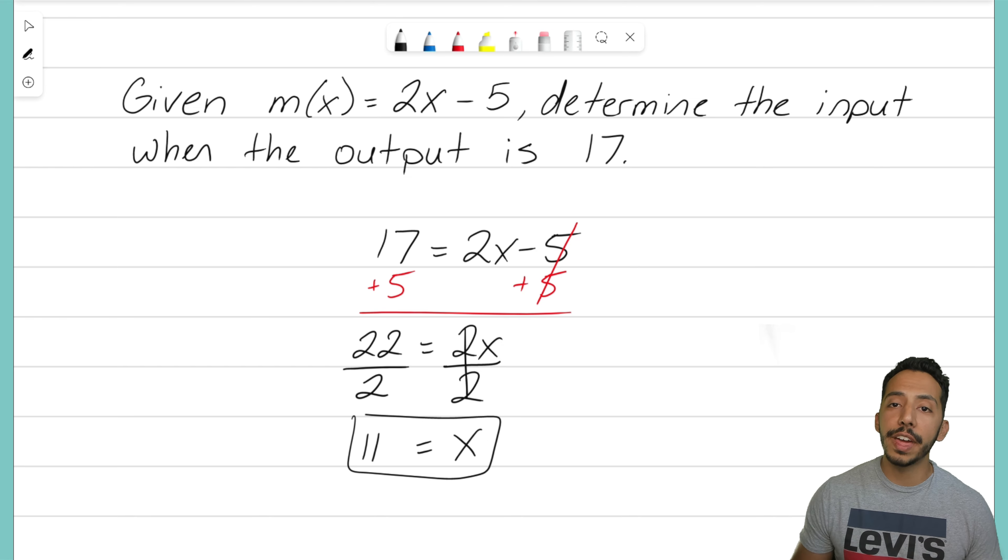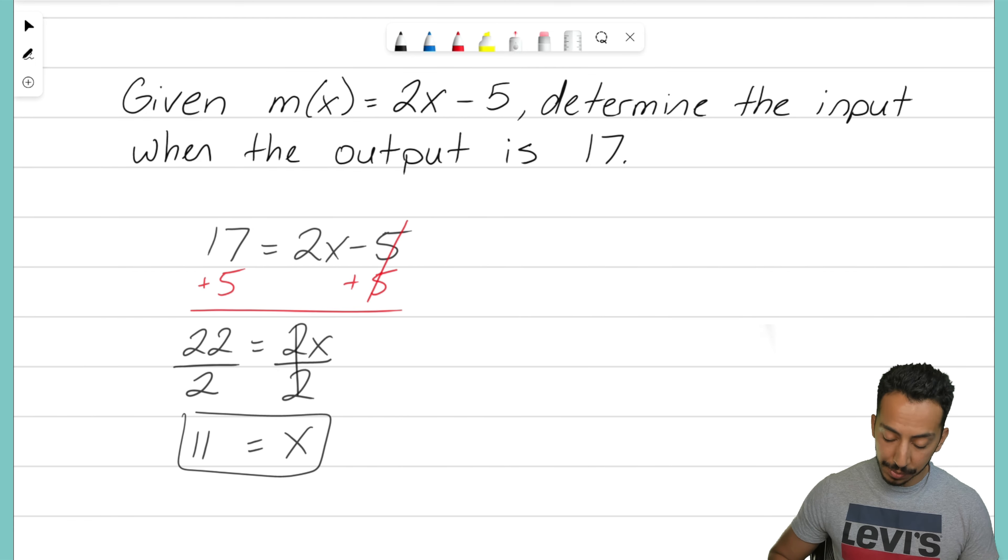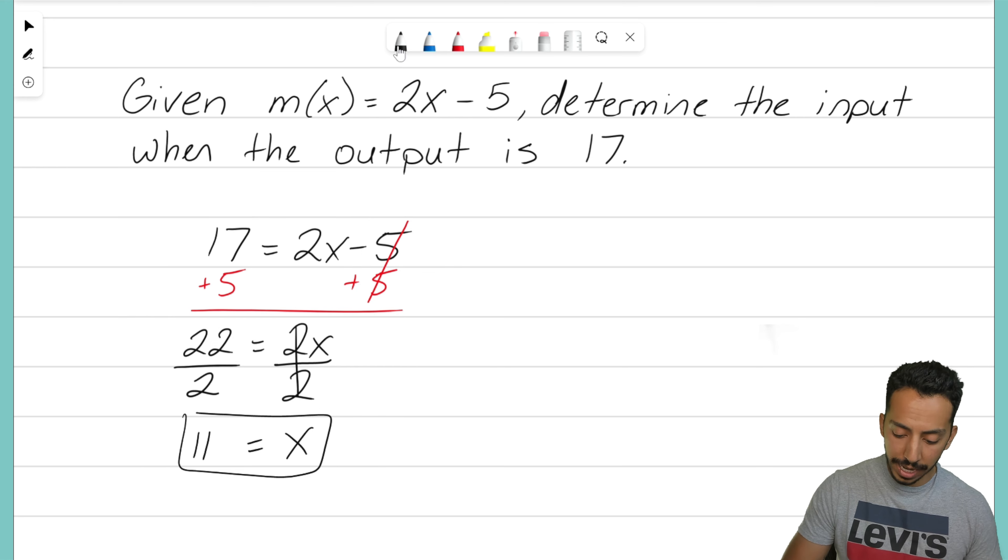That shows you right there that our input is 11 when our output is 17. And if you don't believe me, well we can always do the second step of checking our work. I'm going to slide that over to show you now. We've figured out that x equals 11. If you don't believe me that when x is 11 your output is 17.